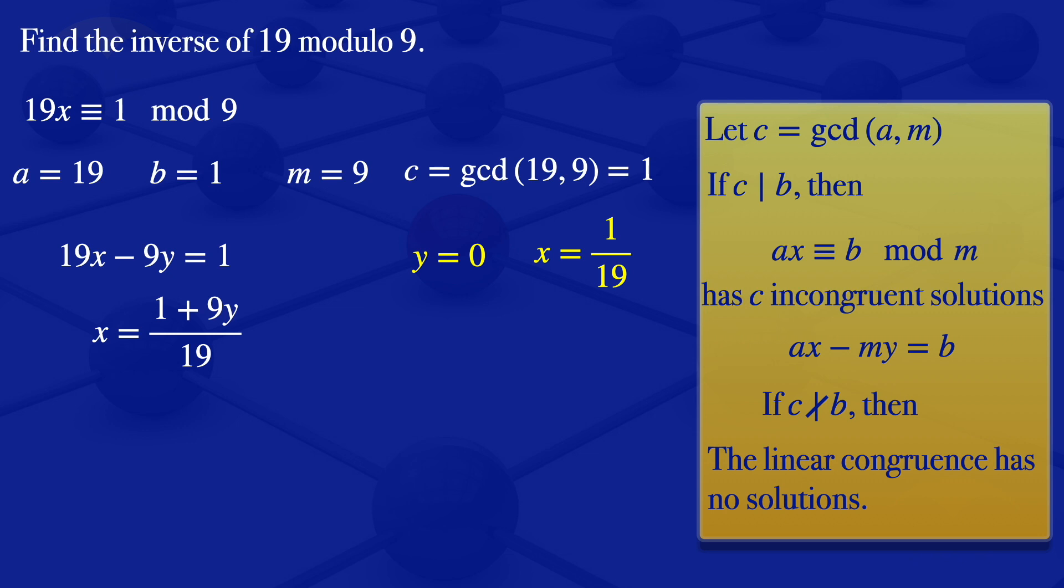We go on to the next. Y equals to 1, we substitute 1 here, and we would have that x is equals to 10 divided by 19. 10 divided by 19 is not an integer, so it's not a solution that we are looking for. We go on to the next.